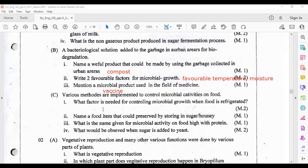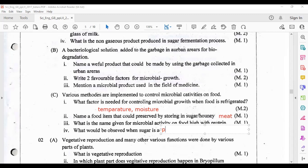Write two favorable factors for microbial growth. You have to write favorable temperature and moisture. Mention a microbial product used in the field of medicine: vaccine. C part: various methods are implemented to control microbial activity on food. What factor is needed for controlling microbial growth when food is refrigerated? The factors we can control are temperature and moisture.